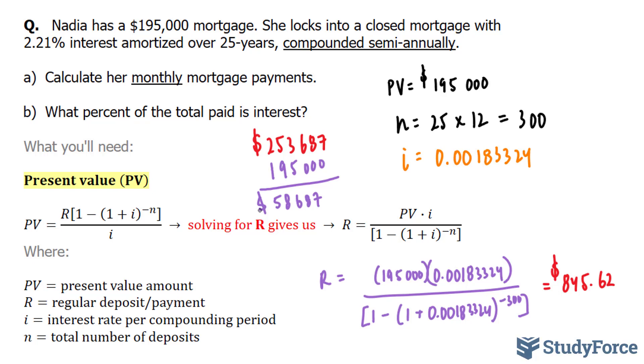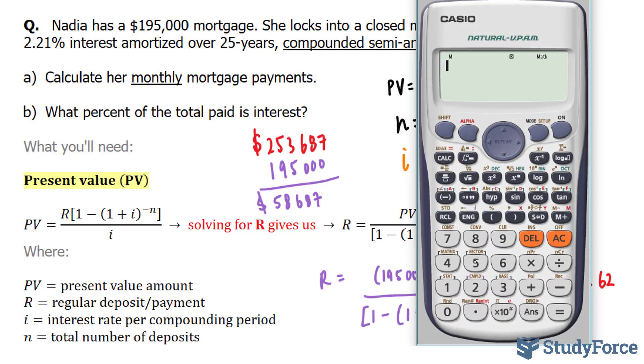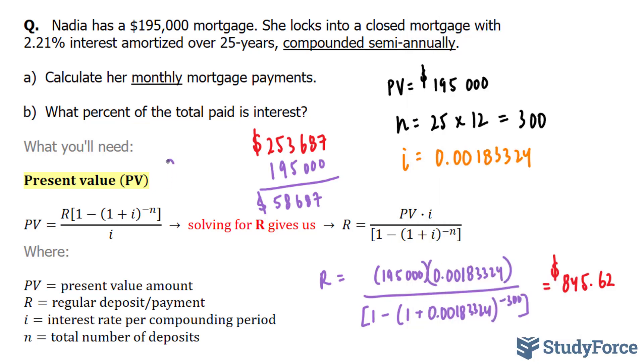58,687. So she has to pay 58,687 more dollars than how much she borrowed in order to get this mortgage. Now, how much of a percentage is that from the total paid? So what we do to find the percentage of the total paid, we take this number and we divide it by 253,687. Let's do that. 58,687 divided by the total paid, and we get 23.13. Multiplying that by 100, that represents 23%.